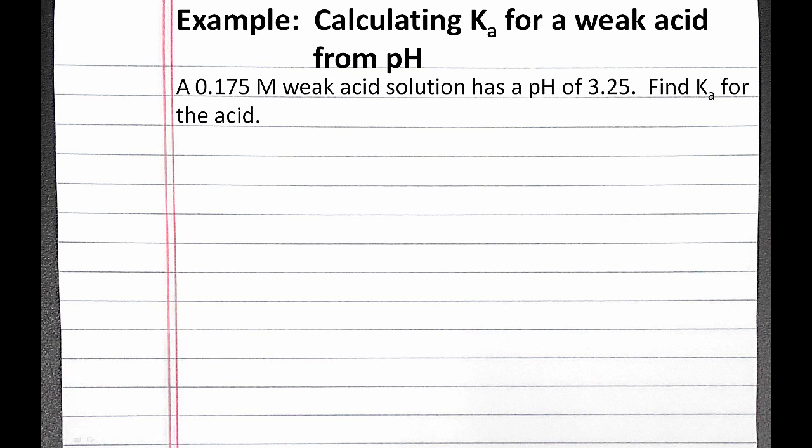In this example problem, we'll calculate Ka for a weak acid given the pH of the weak acid solution. Our problem reads: a 0.175 molar weak acid solution has a pH of 3.25. Find Ka for the acid.